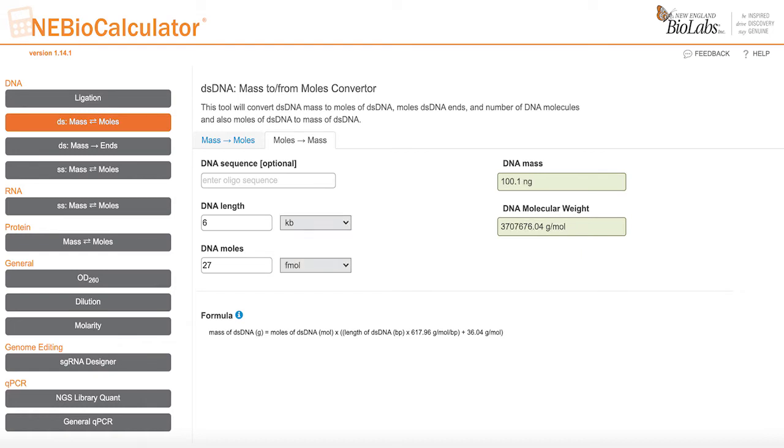Based on these parameters, you can see that to have 27 femtomoles of vector, you will need to add 100.1 nanograms of vector DNA.